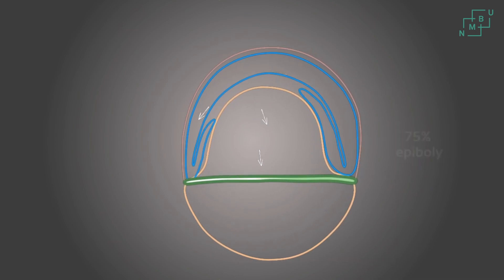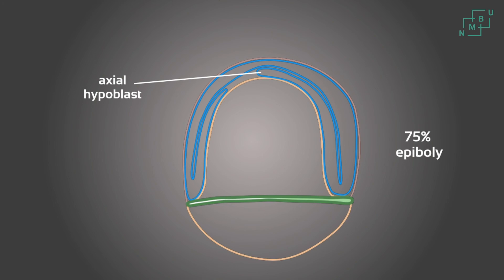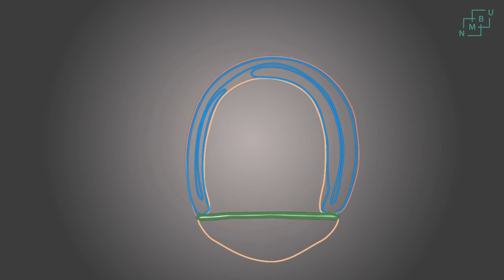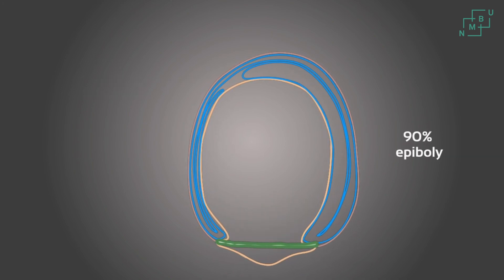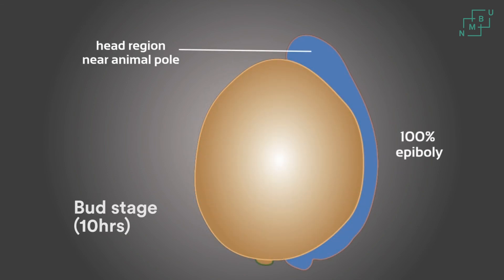At the embryonic shield, the involuting cells form the axial hypoblast, which continues the movement of involution to stream towards the animal pole. At 90% epiboly, the axial blastoderm thickens on the dorsal side rather than the ventral. At 100% epiboly — the bud stage, at about 10 hours — the gastrular period is defined as ended when the epiboly is complete and the tail bud has formed.